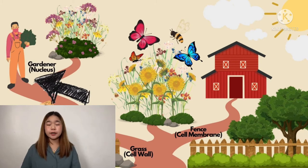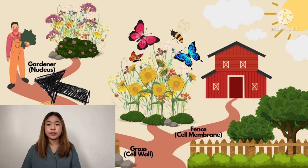The nucleus controls and regulates activities in a cell. In the garden, the gardener is the nucleus and it controls all the activities in the farm, including watering and trimming flowers and plants.